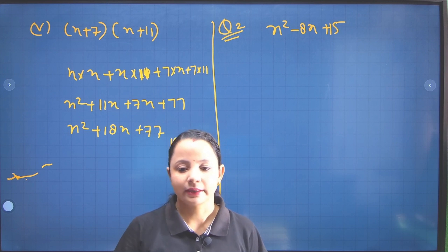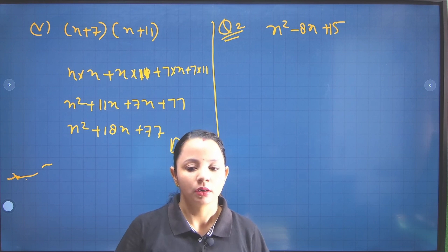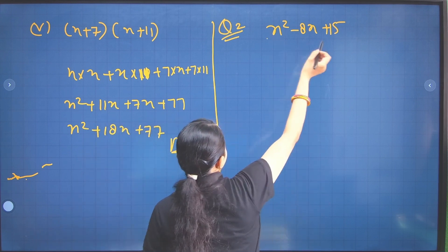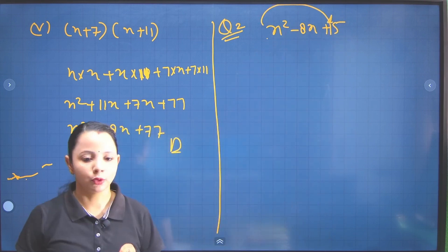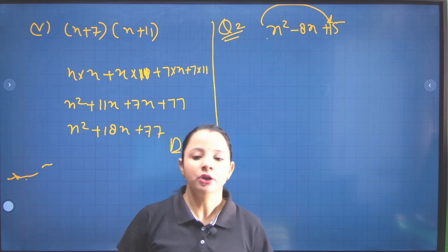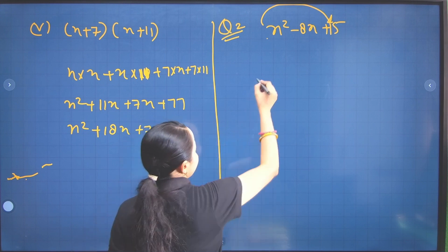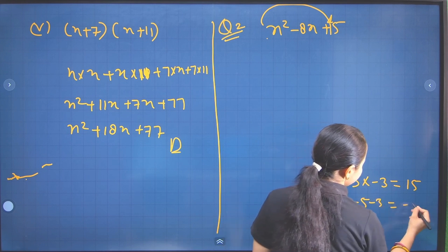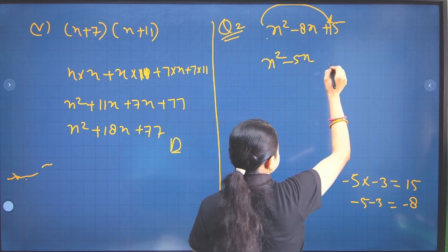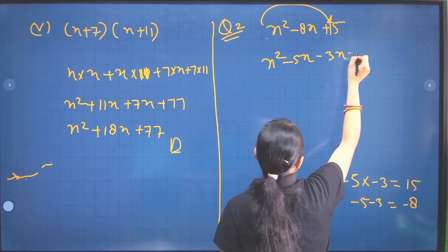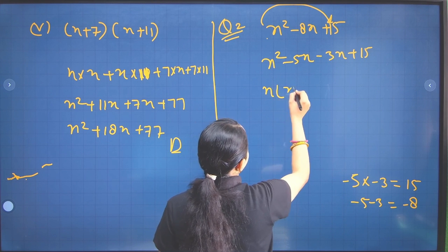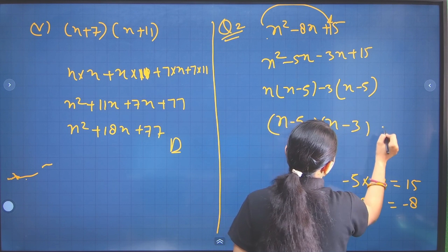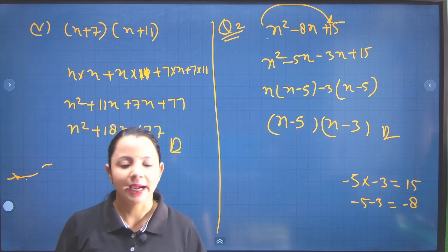Our second part is to factorize each of the following expressions. In the previous video I explained factorization. We look at the first term and the last term. The coefficient here is 1, and 15 factors as 5 times 3. We need minus 5 and minus 3, which give minus 8. So we write x squared minus 5x minus 3x plus 15.